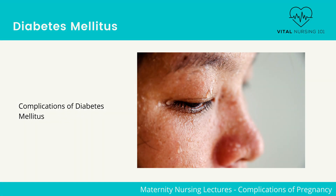Here are the risks to both the newborn and mother when there is poor glucose control: congenital anomalies, spontaneous abortions, macrosomia which can lead to birth trauma and dystocia, death, and hypoglycemia after birth.